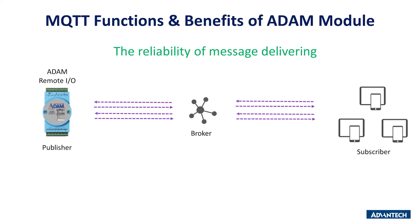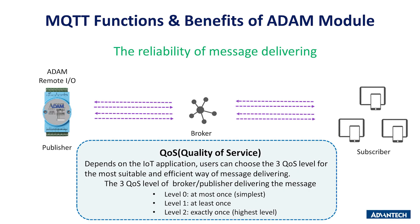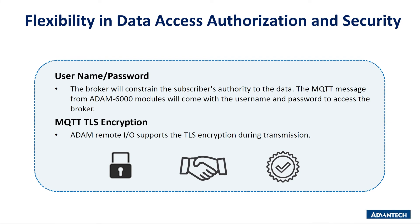Next is flexibility in quality of service. Based on the IoT application, users can choose among three QoS levels for the most suitable and efficient way of delivering a message. For example, if the user is under a stable connection environment and the loss of some data is still acceptable, QoS 0 may be a good choice. ADAM modules offer the flexibility for users to choose among QoS 0, 1, and 2 according to their application.